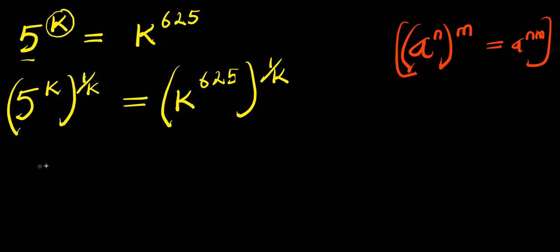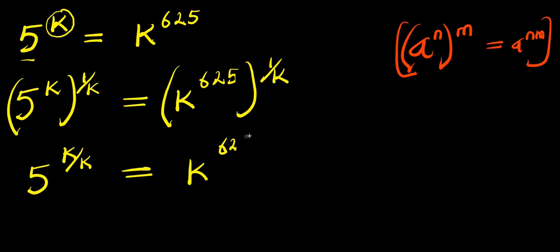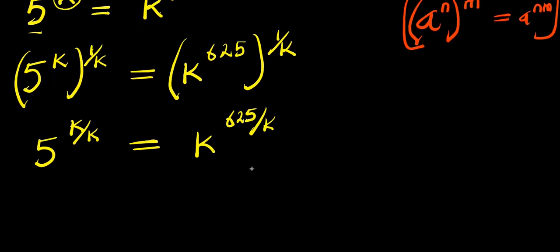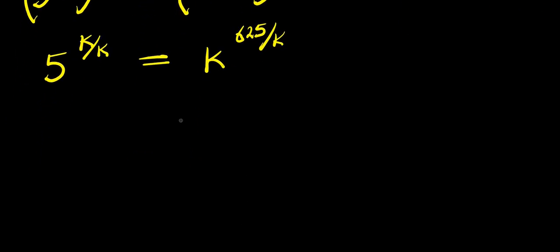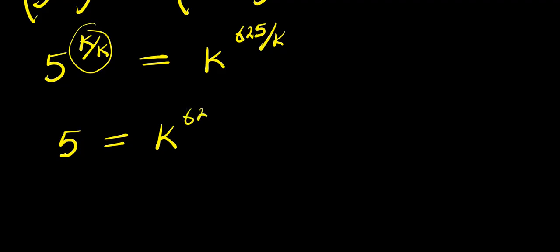So we have 5 to the power k times 1 over k, that is k over k, equals k to the power 6/5 times 1 over k, that is 6/5 divided by k. From here, k divided by k is 1, so I have 5 equals k to the power 6/5 divided by k.